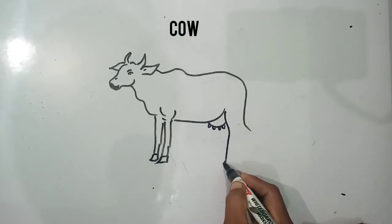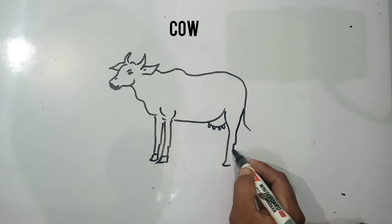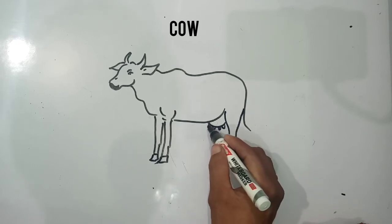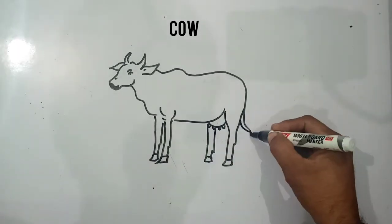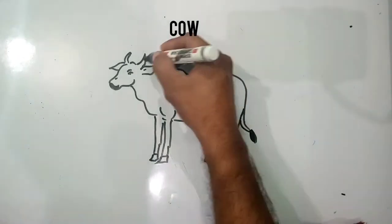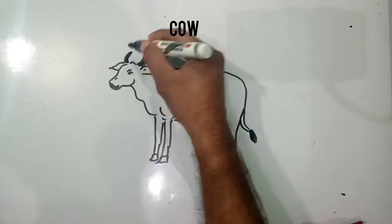Draw slowly. When making the cow, if you make mistakes it doesn't matter, but you have to practice continuously like this.